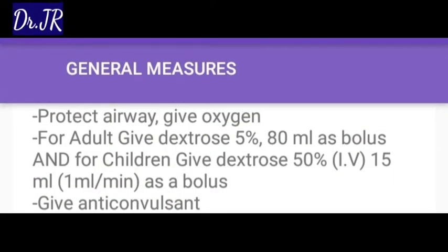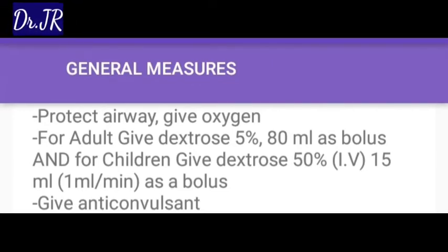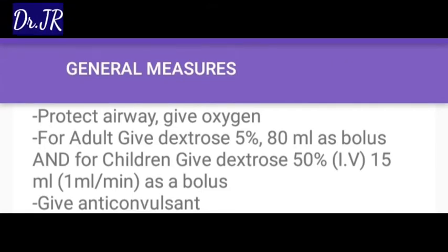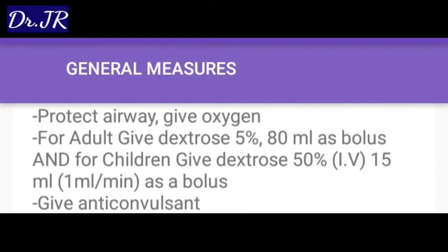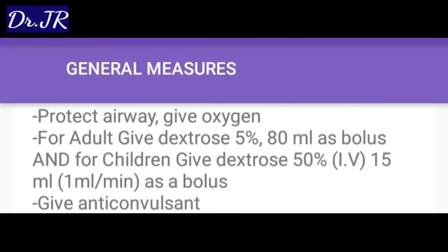General measures to treat status epilepticus: protect the airway and give oxygen. For adults, give dextrose 5% 80 ml as a bolus. For children, give dextrose 50% IV, 50 ml at 1 ml per minute as a bolus. Give anticonvulsant.